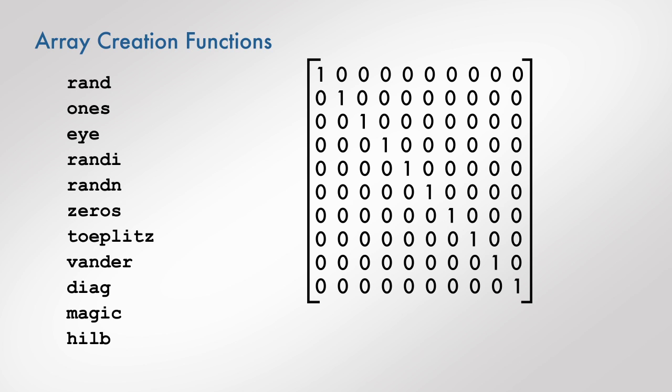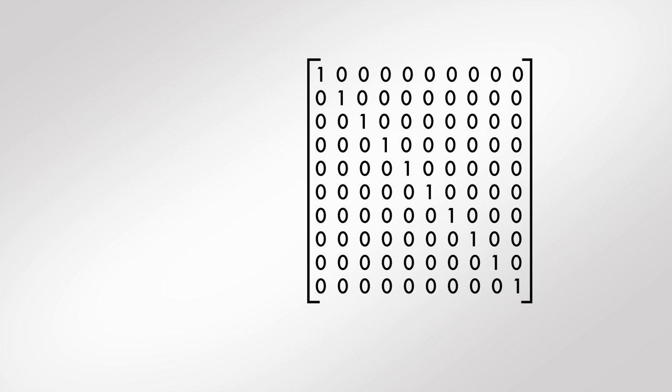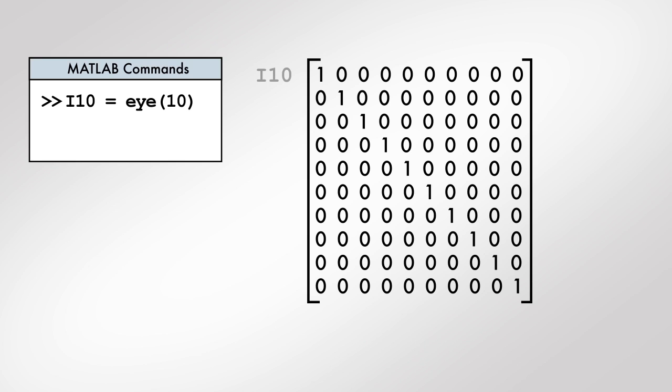You may recognize the matrix shown as the 10 by 10 identity matrix. MATLAB has an array creation function called the eye function that returns an identity matrix as output. We can use the eye function as in this command. Since identity matrices have the same number of rows and columns, the single input to the eye function specifies the number of rows and number of columns.